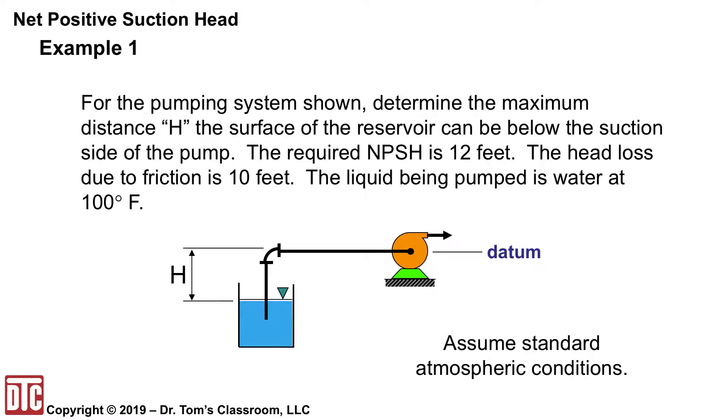So let's look at an example here for the pumping system shown. And again, in this particular case, it only matters really what's happening on the suction side. So what we have here is we want to determine the maximum H that can happen for this one. If the required NPSH is 12 feet,